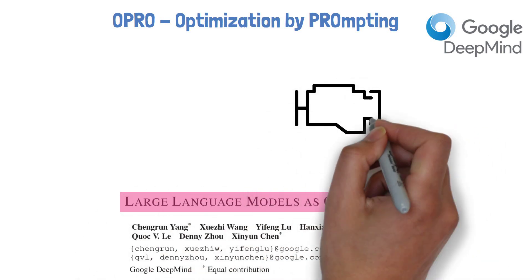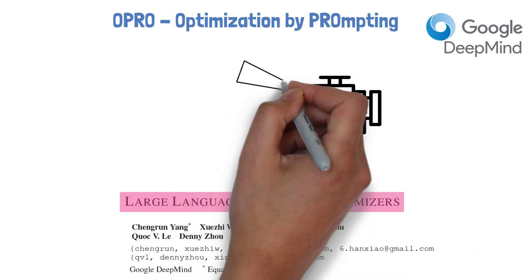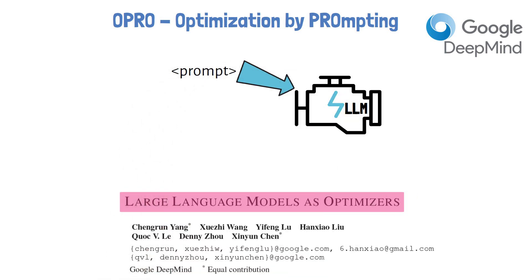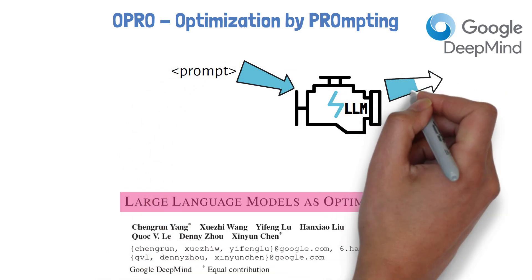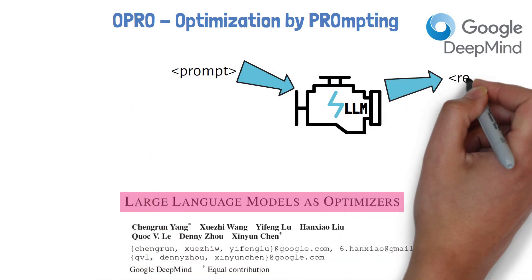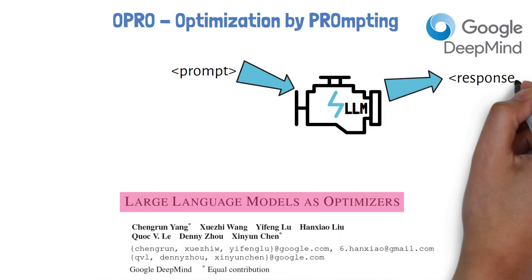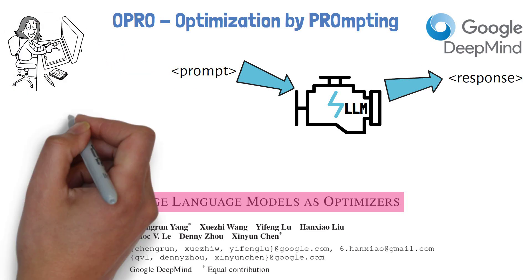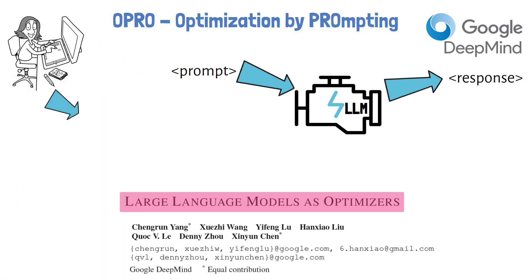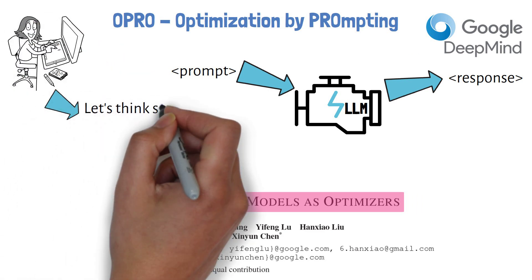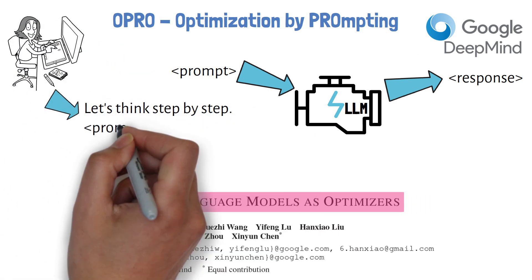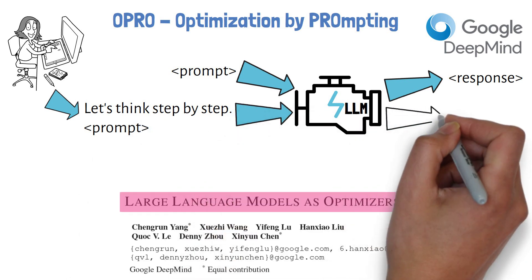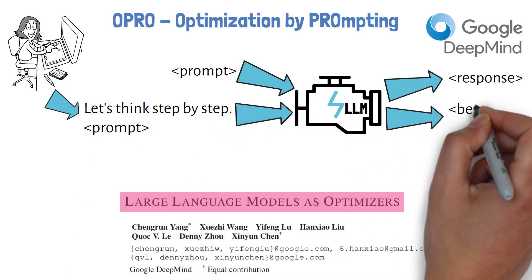Large language models are very good at getting a prompt, such as an instruction or a question, and yielding a useful response that matches the input prompt. By extending the prompt with a carefully human-crafted addition of an instruction, such as 'let's think step by step,' large language models have been shown to yield better responses.